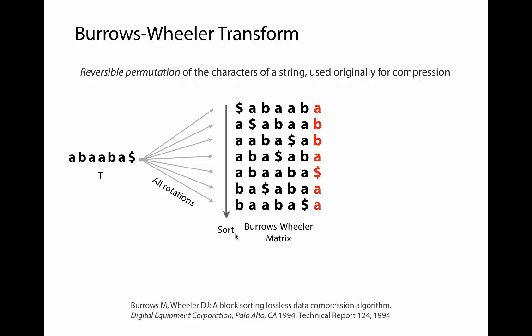What we get is a matrix called the Burrows-Wheeler matrix. Every row of this matrix is a rotation of T. The Burrows-Wheeler transform is simply the final column of this matrix, read off from top to bottom. So the Burrows-Wheeler transform of T is A, B, B, A, dollar sign, A, A.